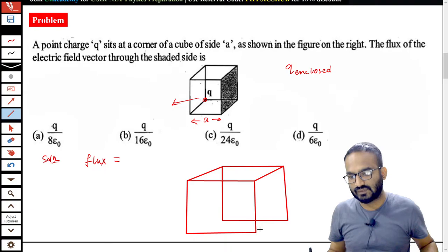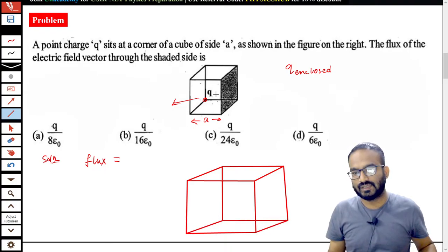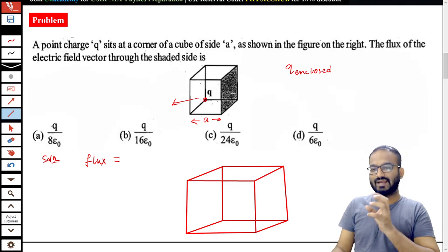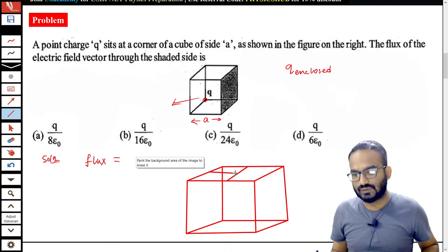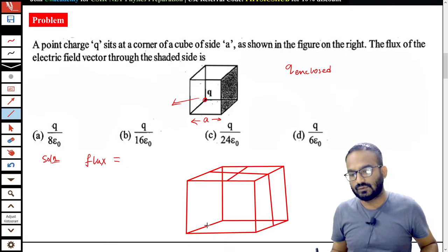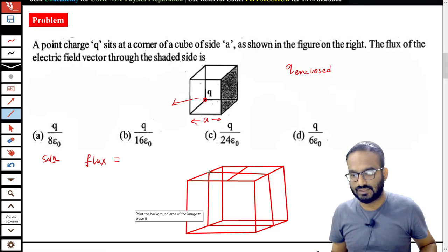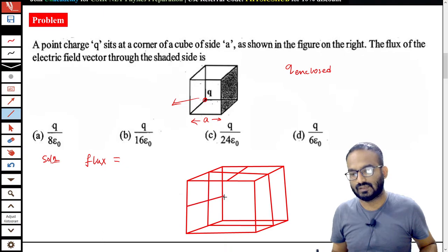Let us try to make the cube in such a way that it becomes like 1/8 of the cube. To surround that charge Q which is sitting at the corner, we have to generate 8 more cubes so that it can be surrounded.